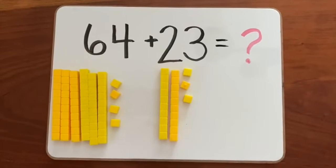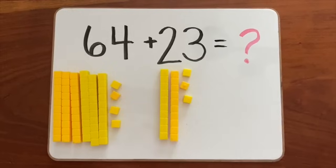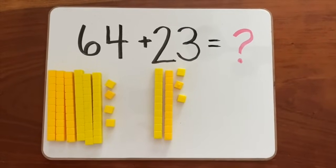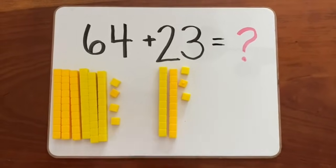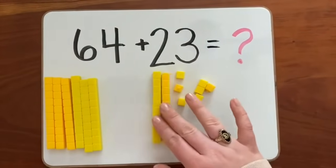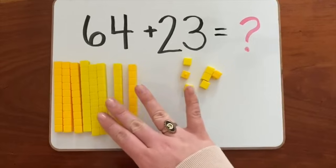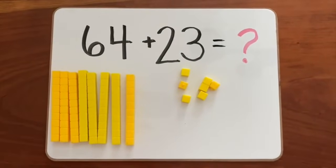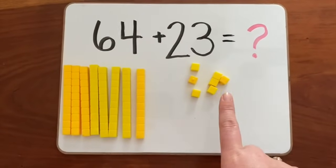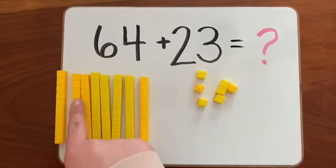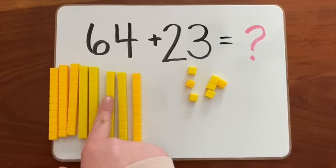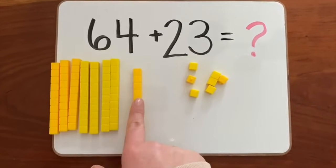Now that both of our numbers are made, we can add our longs and cubes together. Remember, when we do this, we combine our longs and we combine our cubes to make the counting part easy. Let's start off by counting our longs by 10, and then when we get to our cubes, we'll count up by ones. 10, 20, 30, 40, 50, 60, 70, 80.